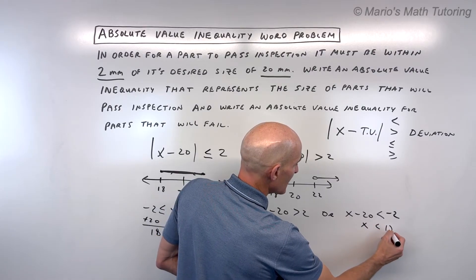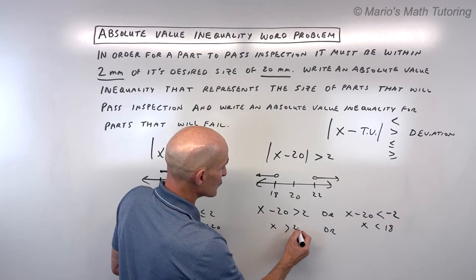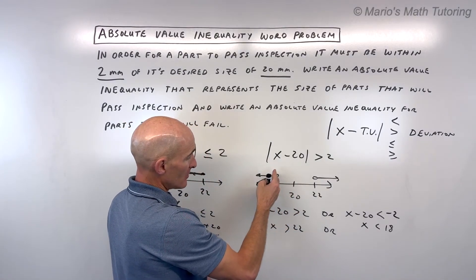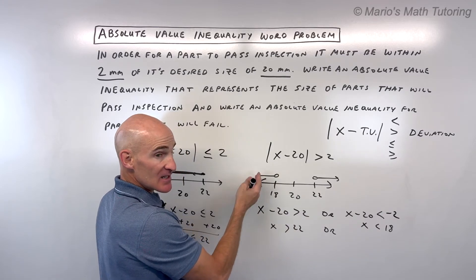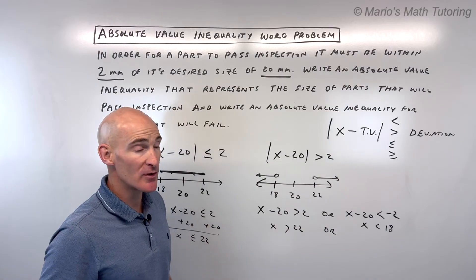Now if I add 20 to both sides, x < 18, or add 20 to both sides, x > 22. Again, 'or' means both. All the parts that are less than 18 millimeters will fail, and all the parts greater than 22 millimeters will fail.